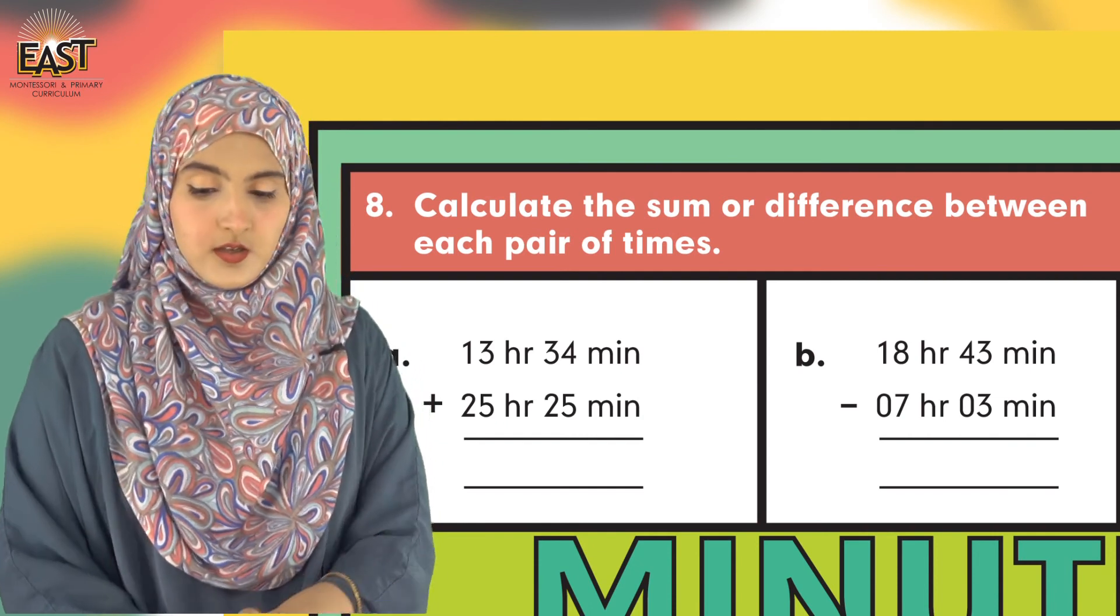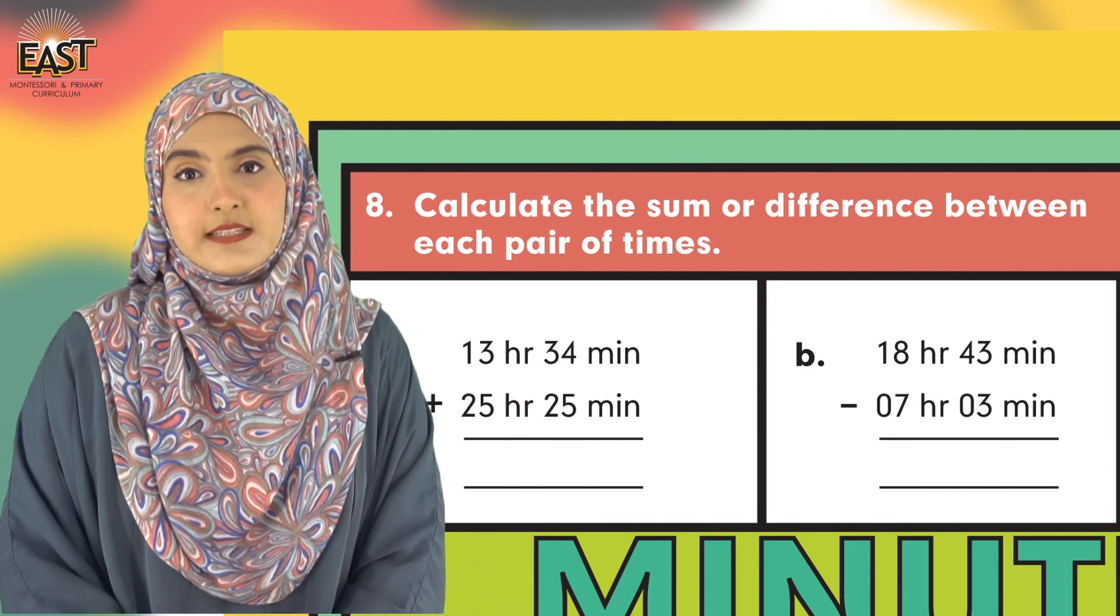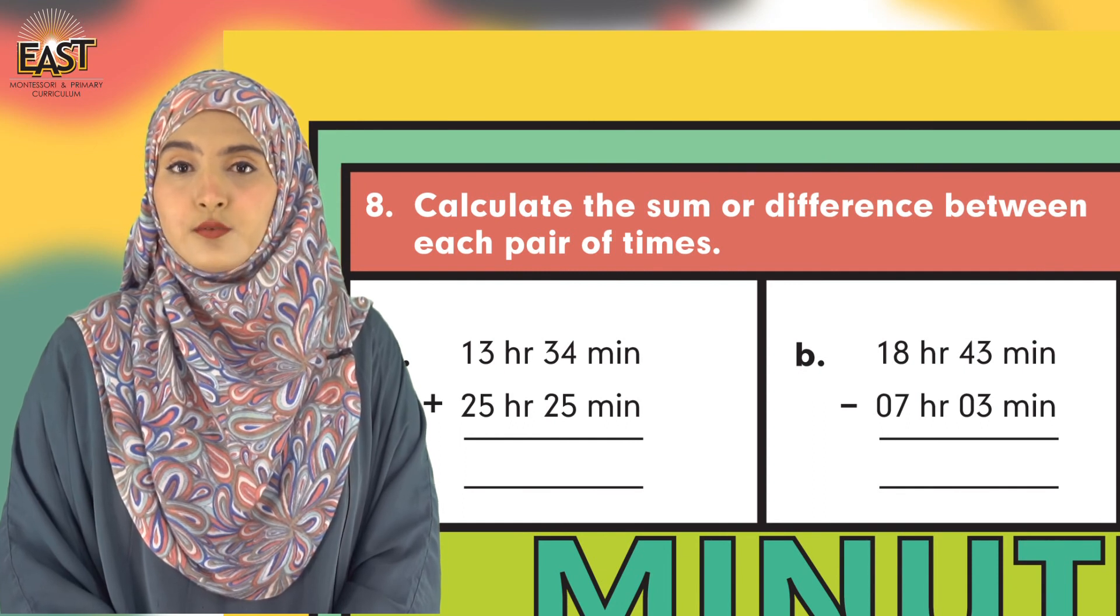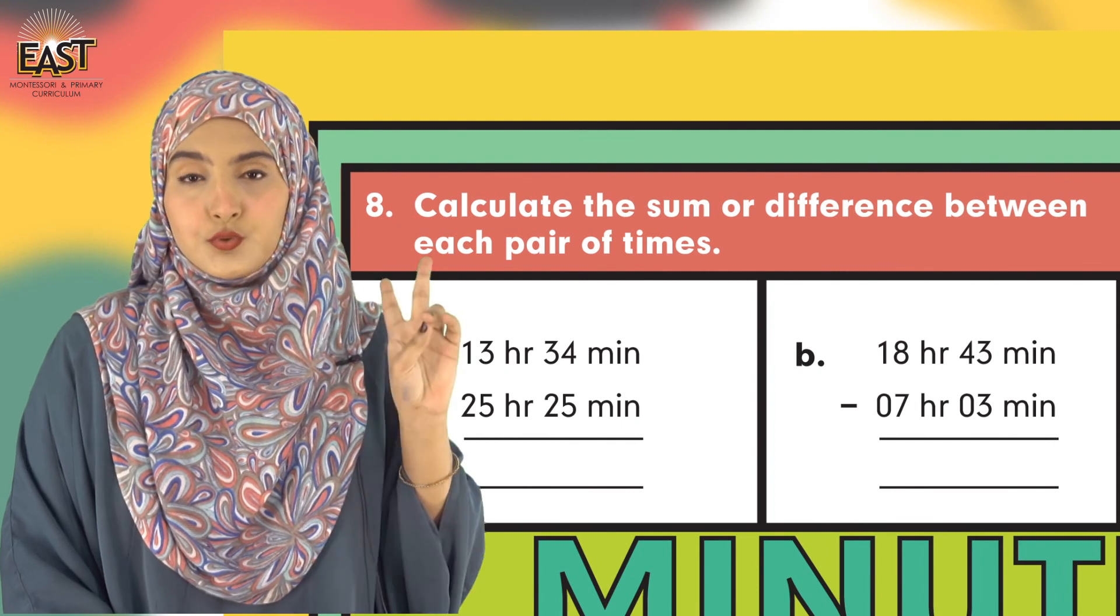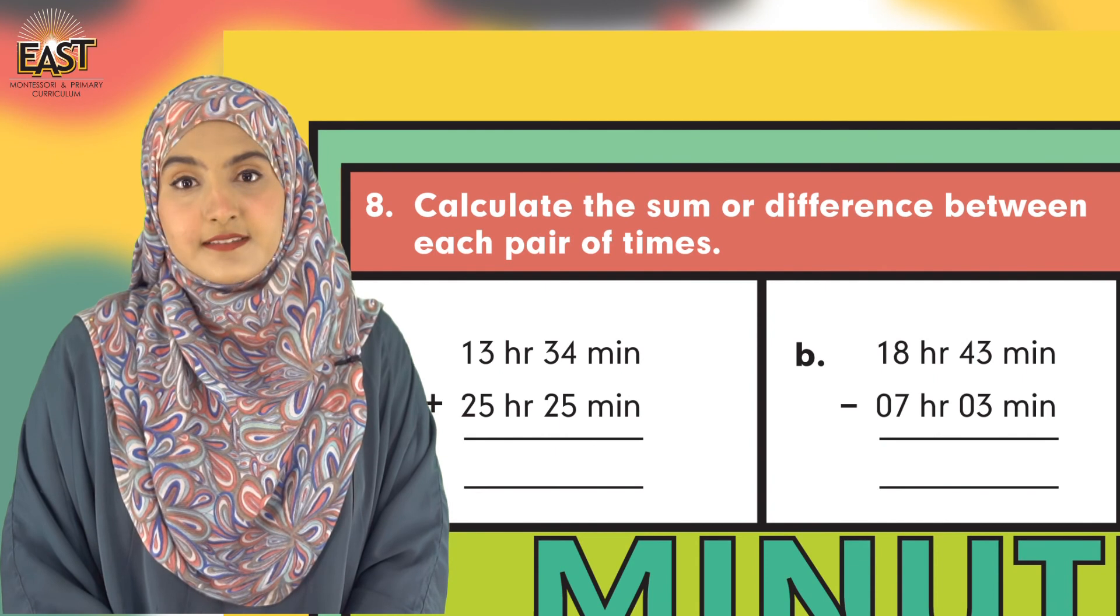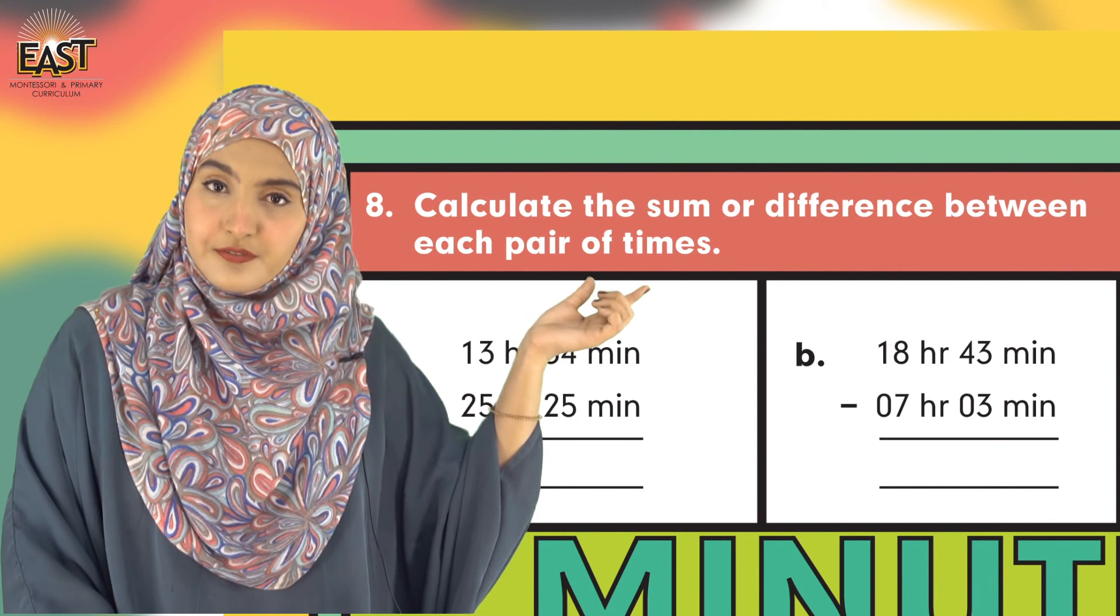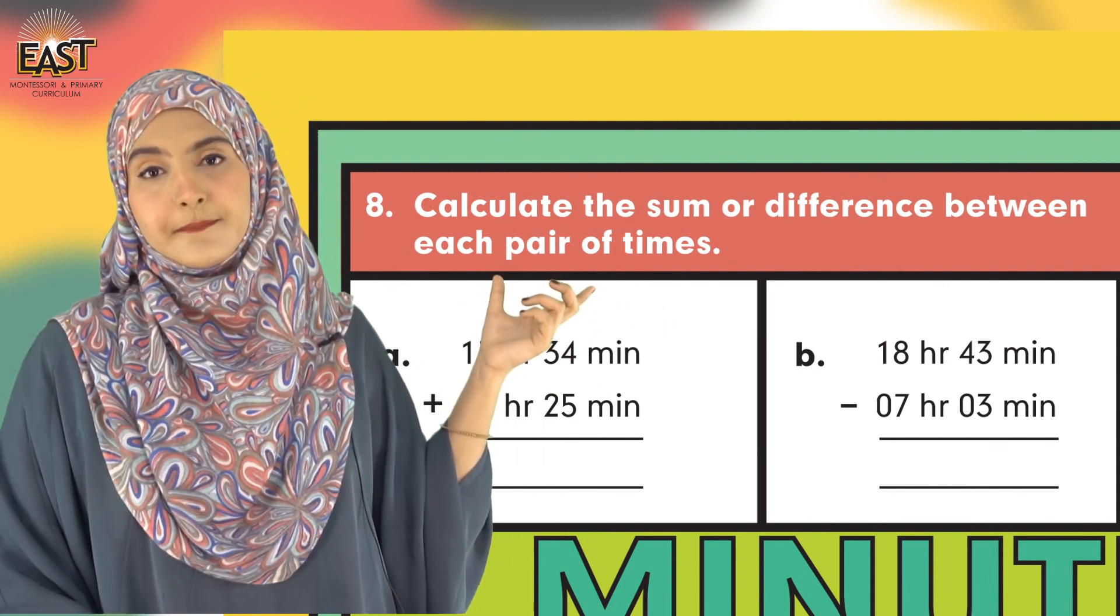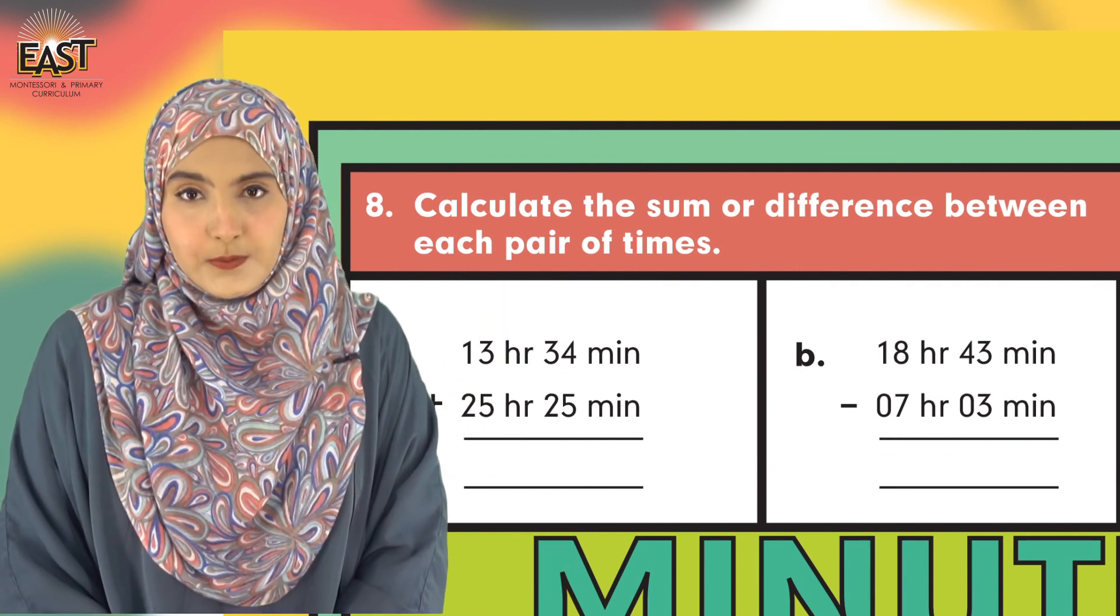You have to calculate sum. First you have to add and find out the total value by adding two different times. You also have to find the difference between two times which are given here. In some questions you have to find the difference by subtraction; in some questions you have to add. Let's start working.